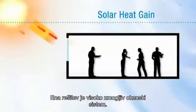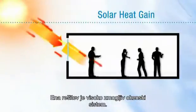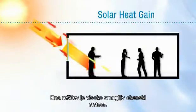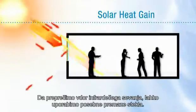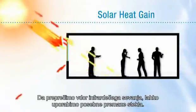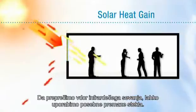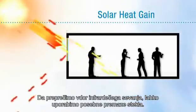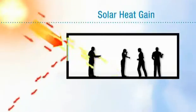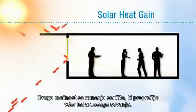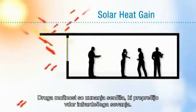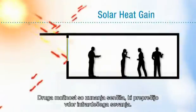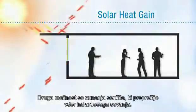One solution is a high-performance fenestration system. Low-E coatings can be used to block the transmission of infrared radiation. Protecting the space with external shades that block infrared radiation is another solution.